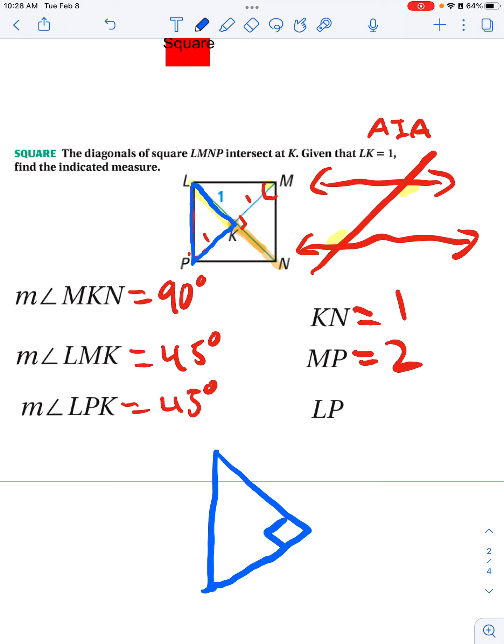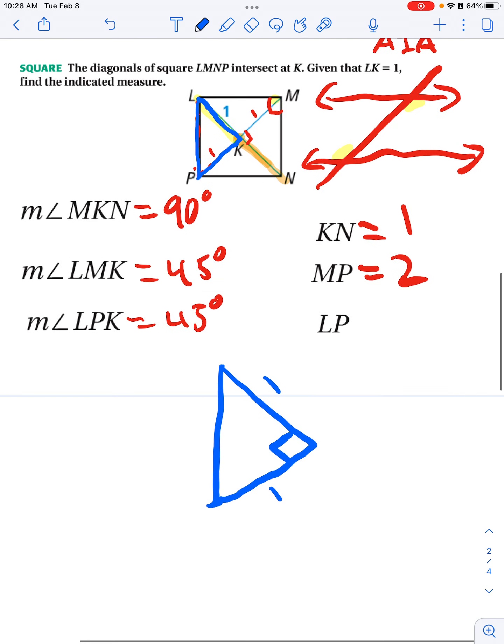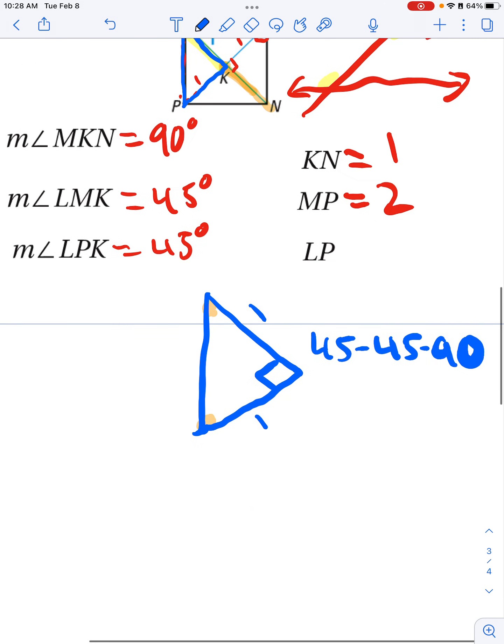So we already know that we have a 90-degree angle right here, and then we said that this side is one and this side is one. So right off the bat, I know I have an isosceles triangle, which means this angle is the same as this angle. In other words, we have a 45-45-90 triangle.